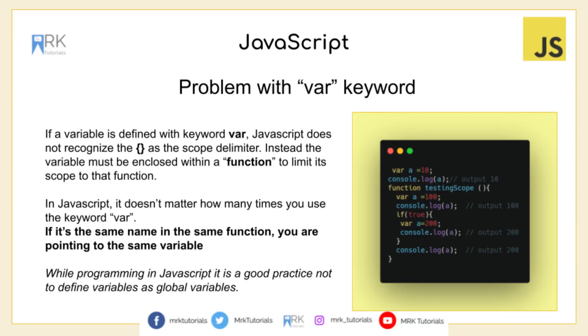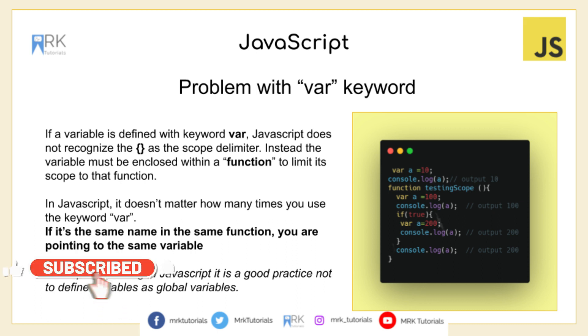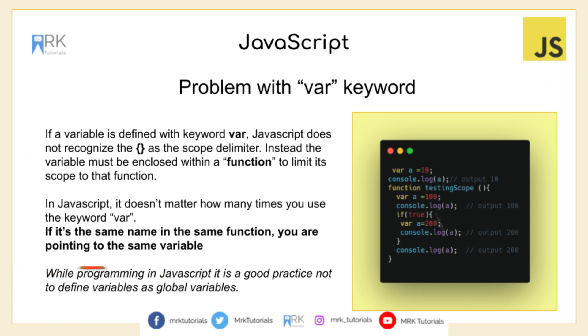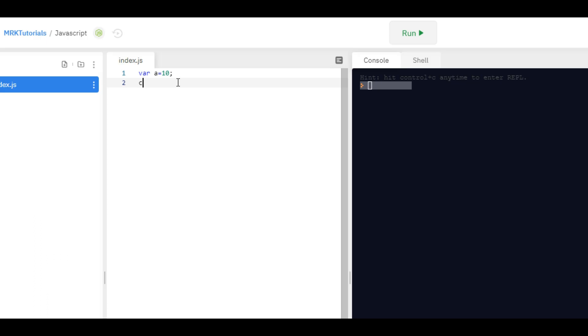So what is wrong with the var keyword? Why are we not using it now? Why did let and const get introduced in ES6? Let's understand it with a simple code snippet first.